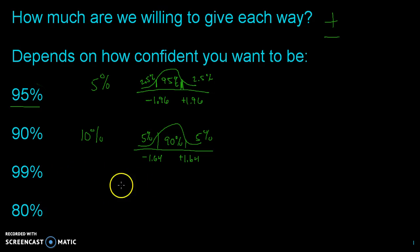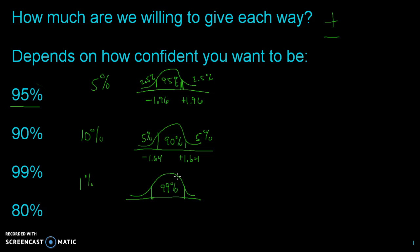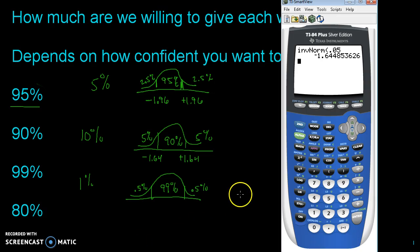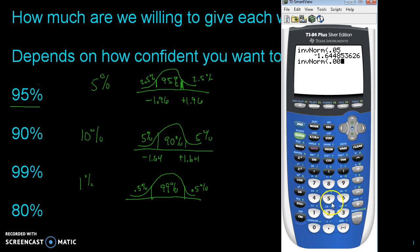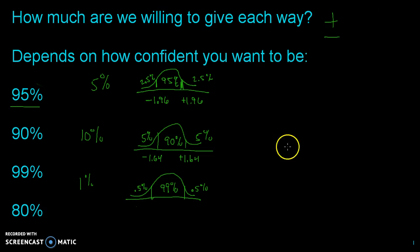If I want to be 99% confident, only 1% is left out. If I'm really confident, that's going to create a bigger interval. This means 0.5% is on the bottom tail and 0.5% is on the upper tail. So when I grab invert norm, I use 0.005 for the 0.5%. That gives negative 2.58. So from negative 2.58 to positive 2.58 — if I want to be 99% confident, I'm willing to go 2.58 standard errors in each direction.